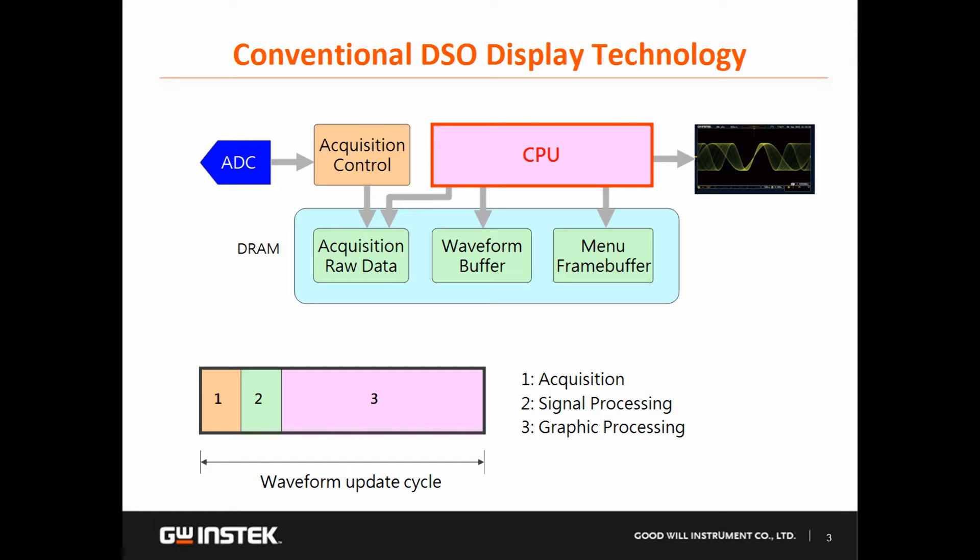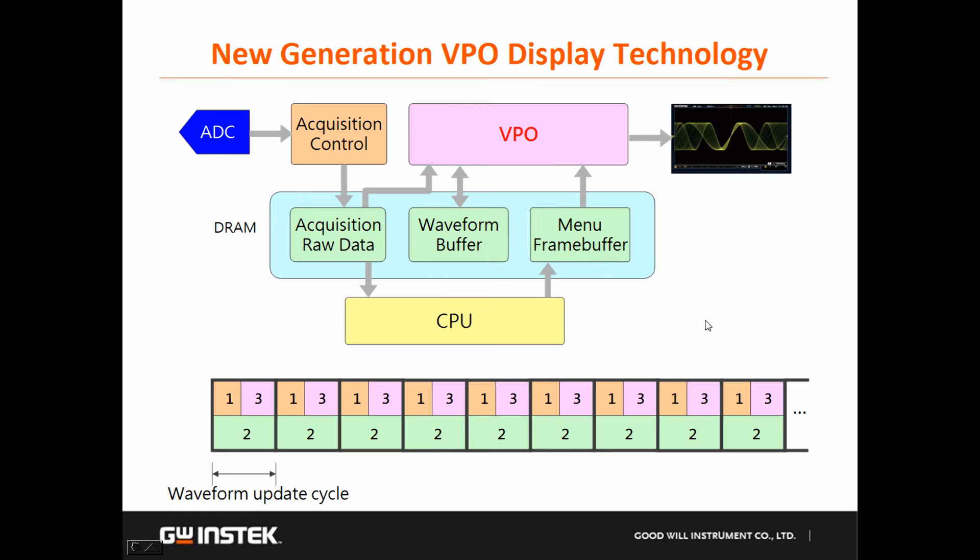For the conventional DSO design, CPU has to handle all tasks. But for GDS-1000B, the new VPO circuit is employed to handle graphic processing tasks in parallel with CPU at the same time.